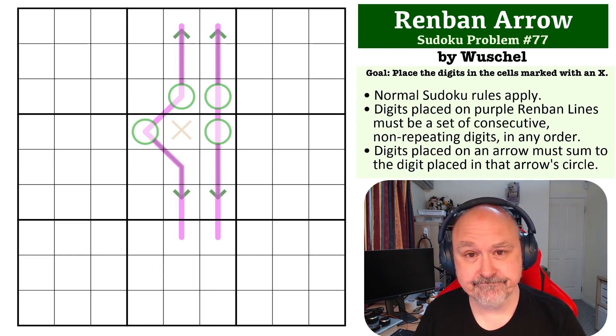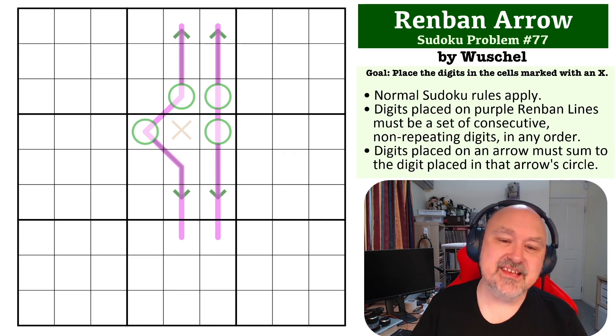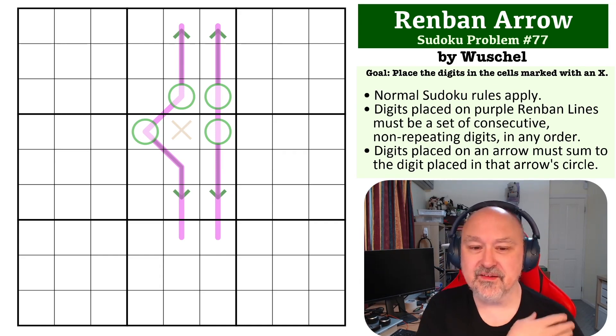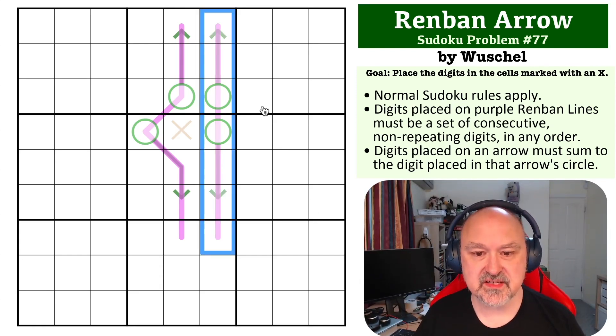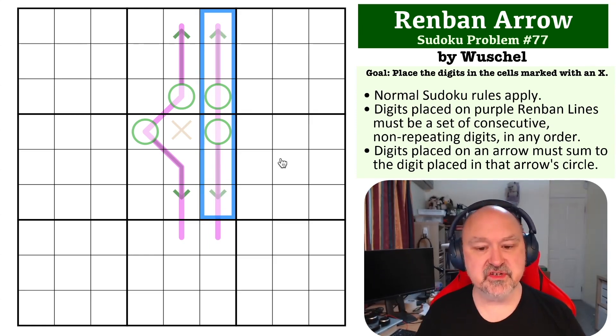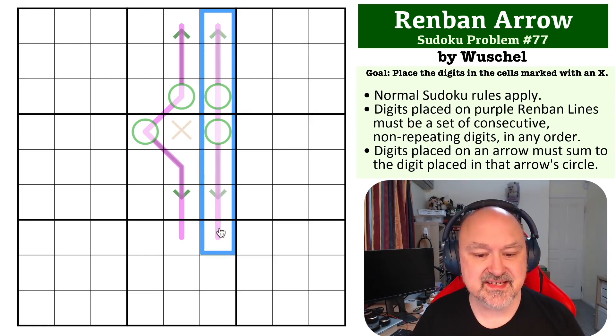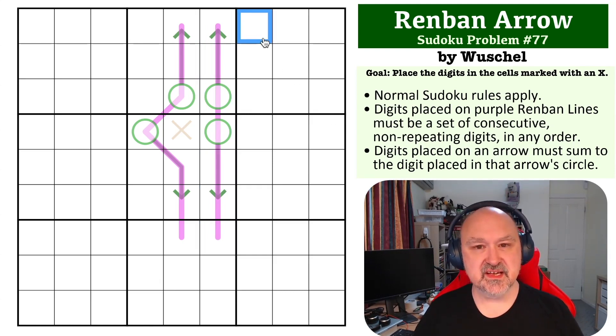Okay, this is quite a tricky one. It took me a while to figure this one out for myself. So the important trick to this one, and you can see it on this line, is that these arrows are actually quite restrictive. Now this is a seven-cell long renban, so it must either contain the digits one through seven, two through eight, or three through nine.